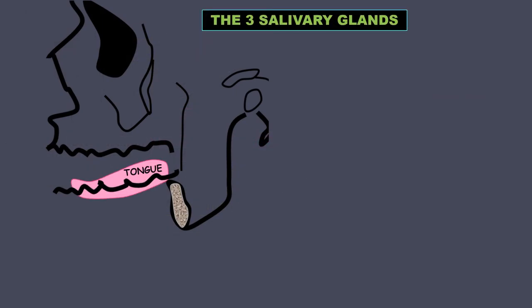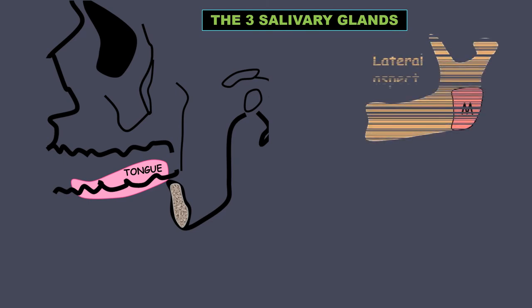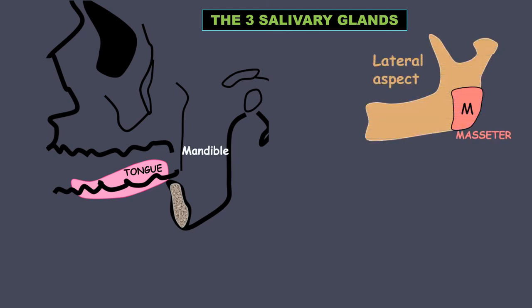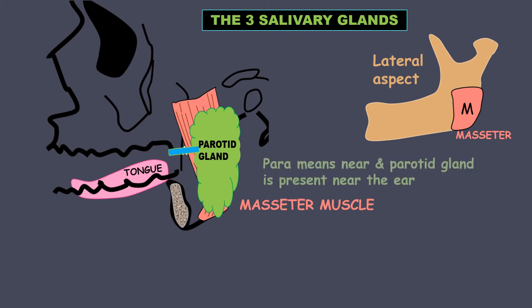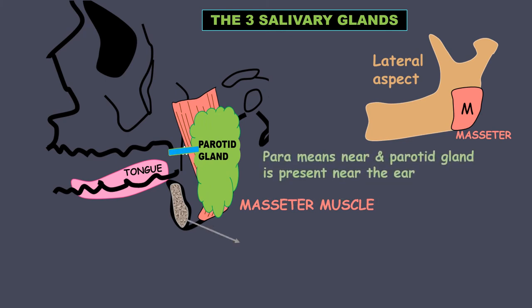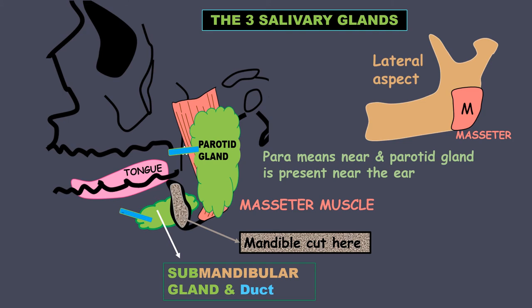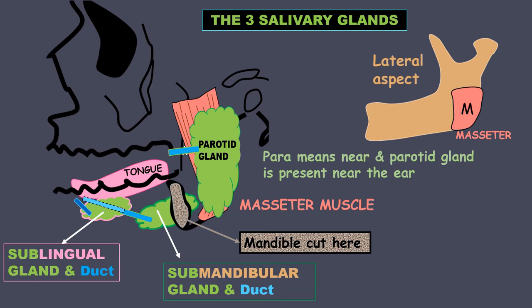Looking at all three salivary glands: on the lateral aspect of the mandible, on top of the mandibular bone is the masseter muscle, and on top of the masseter muscle is the parotid gland — 'para' means near, so the parotid gland is near the ear. If the mandible is cut, you can see the submandibular gland and its duct. The sublingual gland lies below the tongue along with its duct, both secreting saliva onto the floor of the mouth.